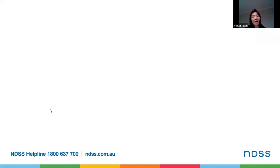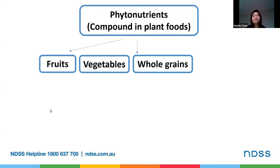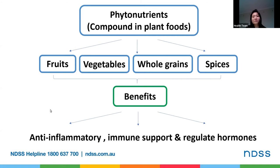Along with the benefits of good fats, vitamins, minerals, fibre, and antioxidants, some carbohydrate-rich foods can also contain phytonutrients, which are naturally occurring compounds found in plant foods such as fruits, vegetables, whole grains, and many spices. They offer a range of functional benefits such as anti-inflammatory effects, immune support, and hormone regulation. They are different to the vitamins, minerals, and macronutrients such as protein, fats, and carbohydrates that we spoke about earlier. Many of these phytonutrients also give food its actual colour as well as smell.